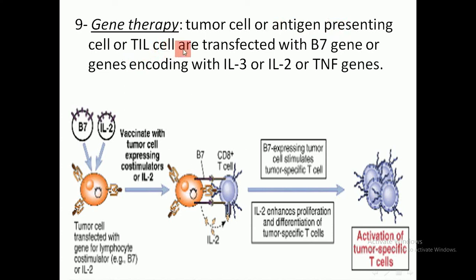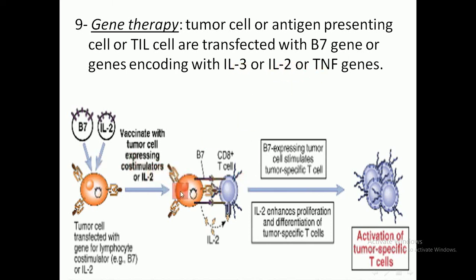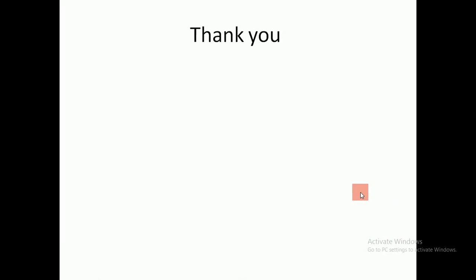The last approach is gene therapy, where tumor cells, antigen-presenting cells, or T cells are transfected with cytokine genes encoding interleukin-3, interleukin-2, or tumor necrosis factor. These gene products bind with key lymphocytes and enhance the proliferation of T cells.